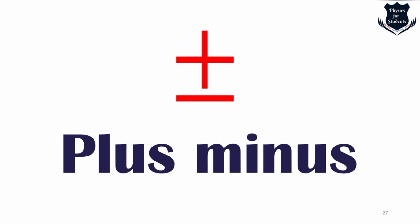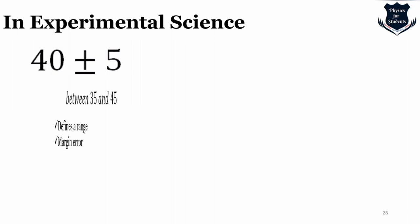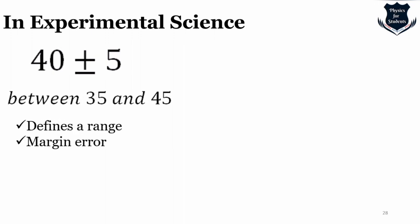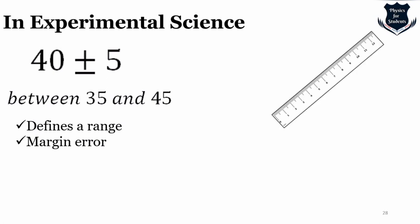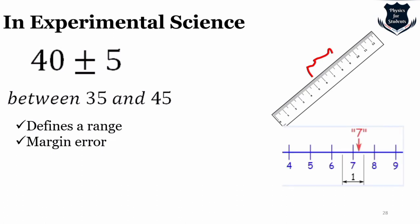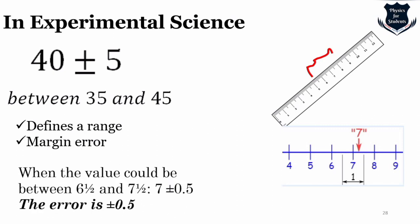The next part is the plus-minus (±) operator. In experimental science, 40 ± 5 means the range should be between 35 and 45 — it defines a range and the margin of error. If we measure something on a ruler, a margin of error of ±0.5 means the value could be between 6.5 and 7.5.